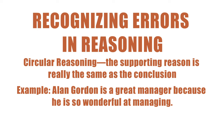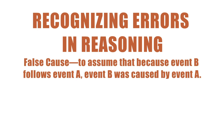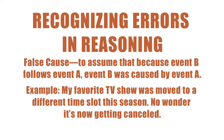Circular reasoning is a fallacy that ignores the issue. Another common fallacy is called false cause, a fallacy that oversimplifies the issue. False cause occurs when one assumes that because Event B follows Event A, Event B was caused by Event A. For example: 'My favorite TV show was moved to a different time slot this season. No wonder it's now getting canceled.' But there could be other reasons for the cancellation — perhaps less competent writers, or perhaps a favorite actor has left the show. It is dangerous to assume that just because A came before B, A caused B.